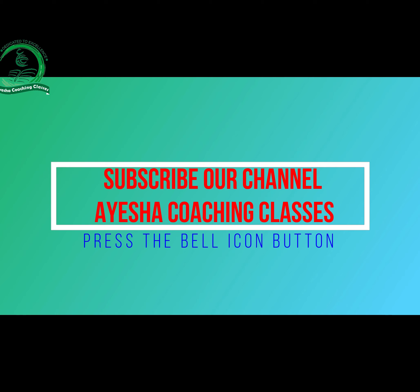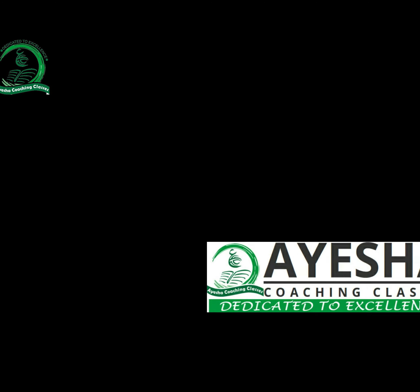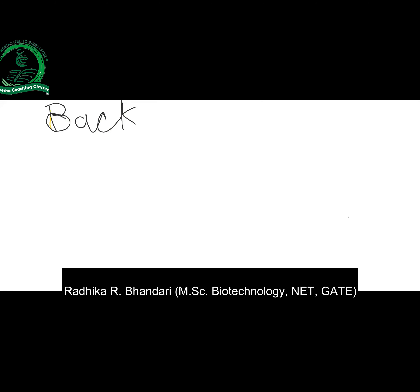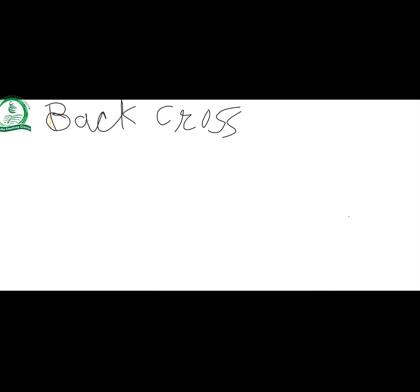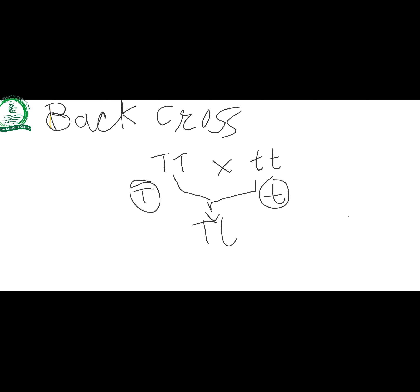The next terminology is back cross. When we are taking the pure line parents, we have two different variants of pure parents — like pure tall, both alleles capital T capital T. When we cross them, we will have a gamete capital T from one parent and a gamete small t from another. Then our hybrid is capital T small t. This is the genotype, and its phenotype is tall.